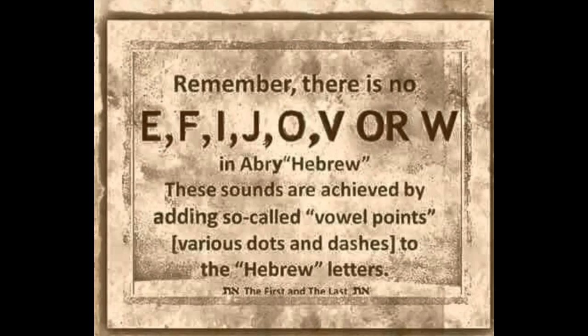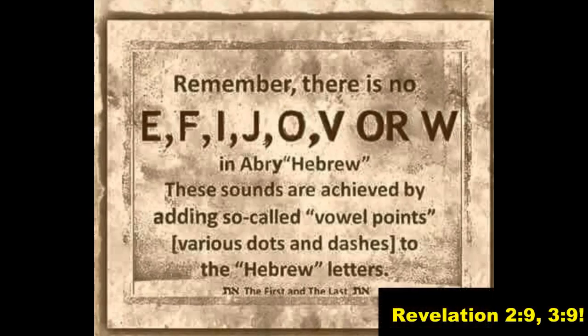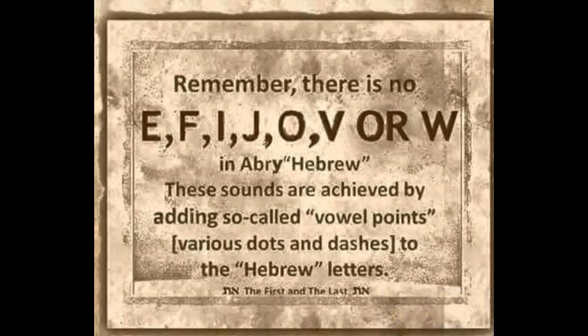Another important point: there are no letters E, F, I, J, O, V, or W in the Yahudiath language. These sounds are achieved by adding vowel points — the Nikud — to the Yahudiath Hebrew letters. Notably, the letters J, E, W — the people who call themselves Jews — those letters are not even in the original Yahudiath alphabet. Revelation chapters 2:9 and 3:9 tell us exactly who they are.